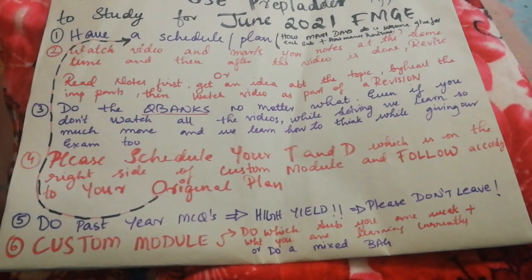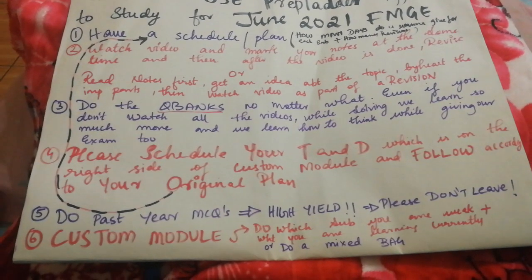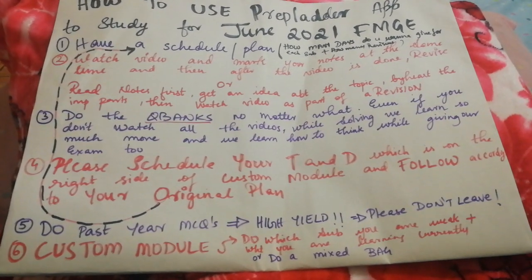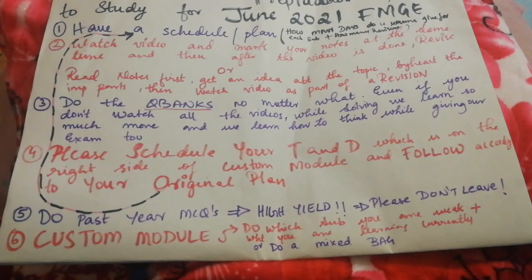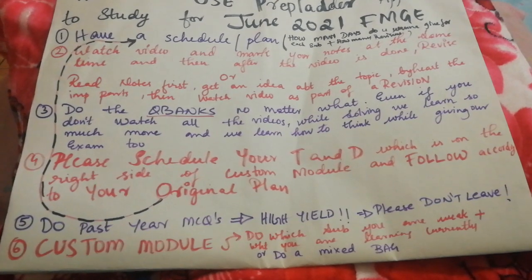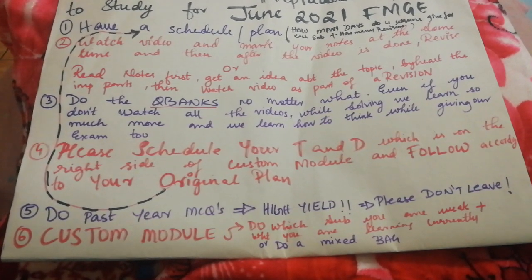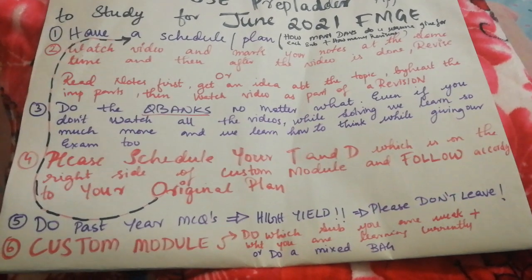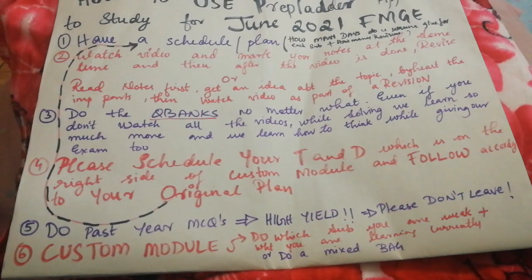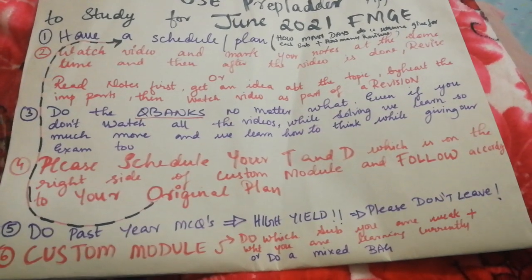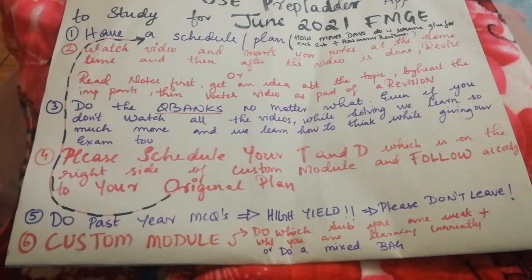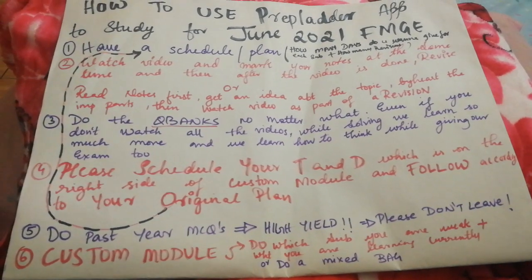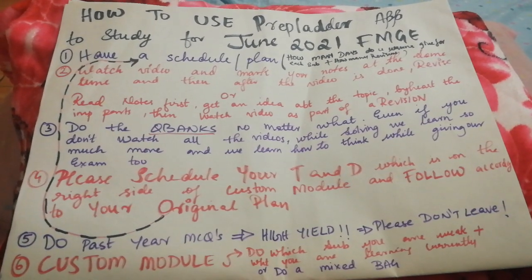Number five is to do past year MCQs because they are high yield. Please don't leave them — from childhood we hear that you need to solve your past papers, and those past papers are going to help you pass the exam with really good scores. For example, if you're doing pathology and you've finished the QBank topics and you're tired, you can go to past year MCQs, filter by pathology, and do those. That way you're covering everything from the subject and learning a lot more.